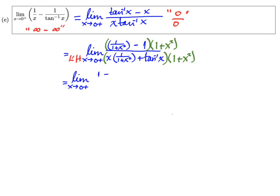And after we distribute that, we get the limit as x approaches zero from the right of 1 minus (1+x²) over x + (1+x²) times tan⁻¹x.